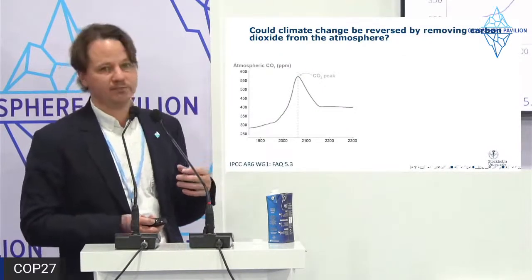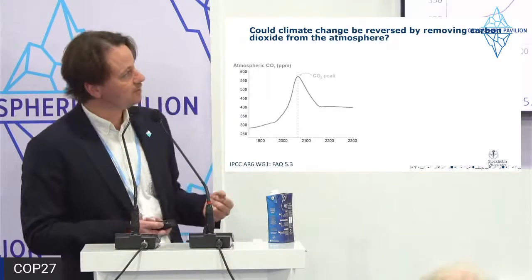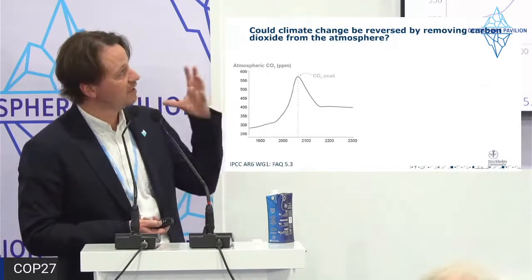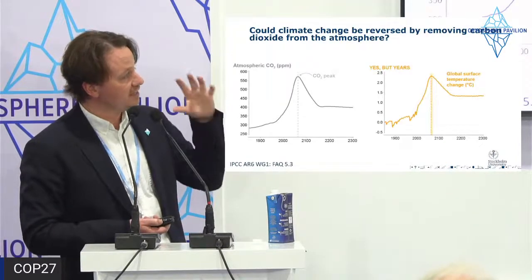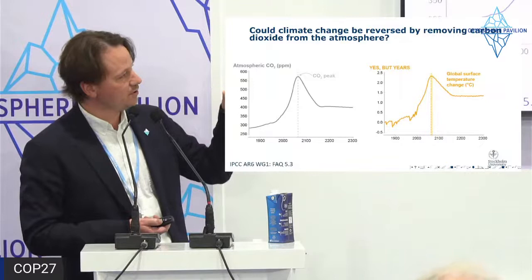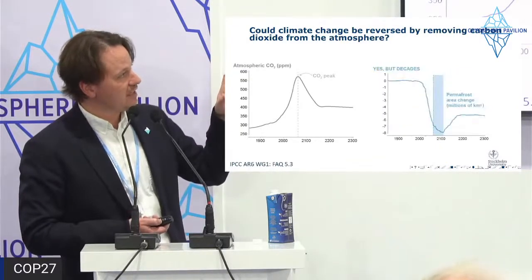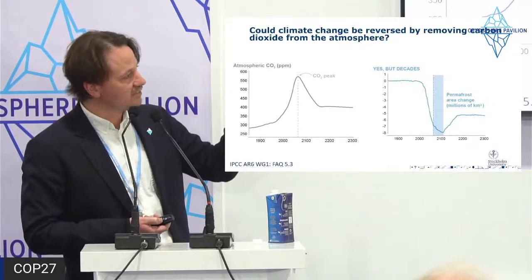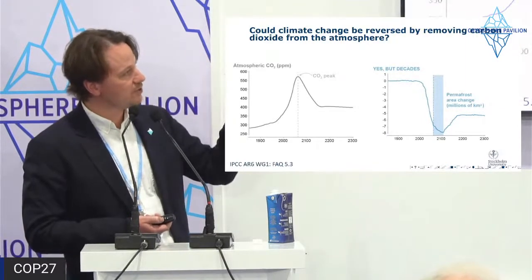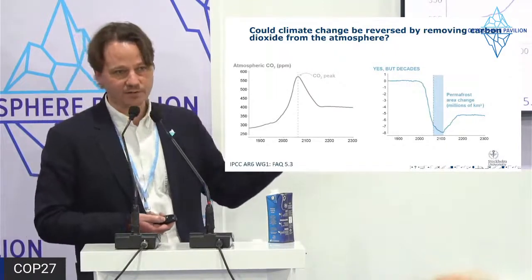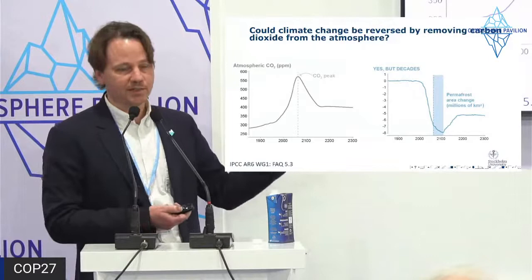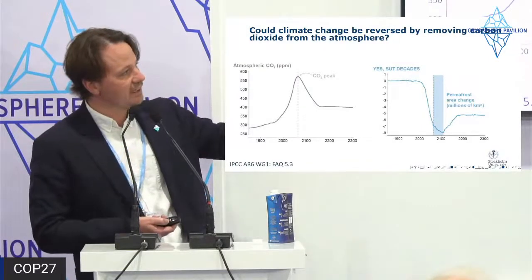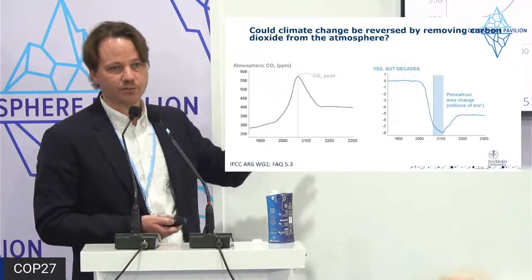The IPCC also looked at the extent to which climate change is reversible. They ask: could climate change be reversed by removing CO2 from the atmosphere? For global surface temperature change — yes, but with lag times of several years. For permafrost extent — also reversible but with a lag time of decades, perhaps centuries. This suggests the IPCC does not see a tipping point in permafrost extent under the scenarios modeled.